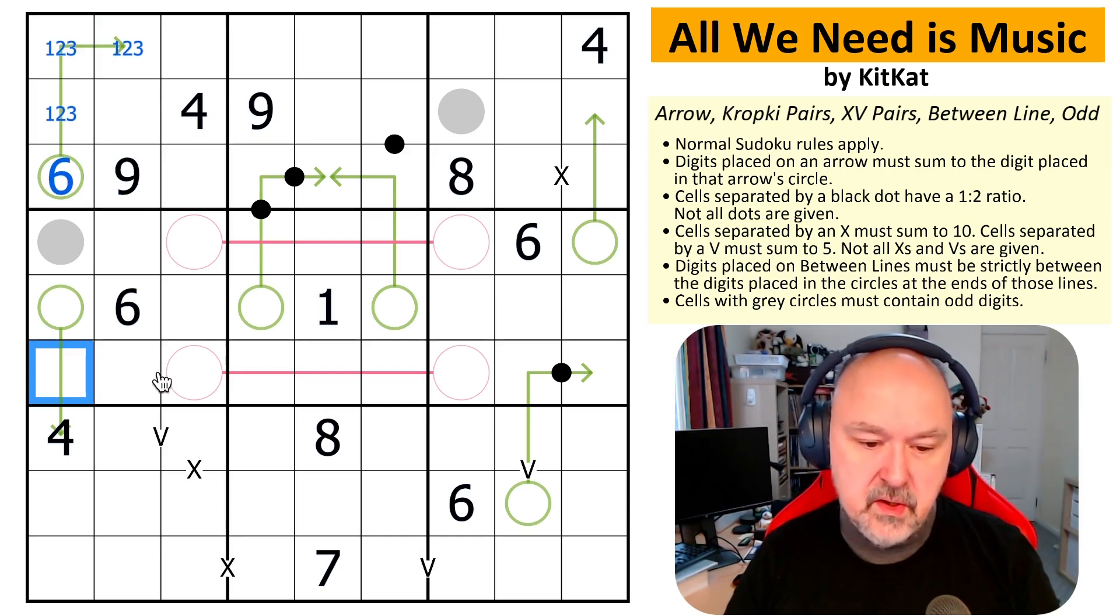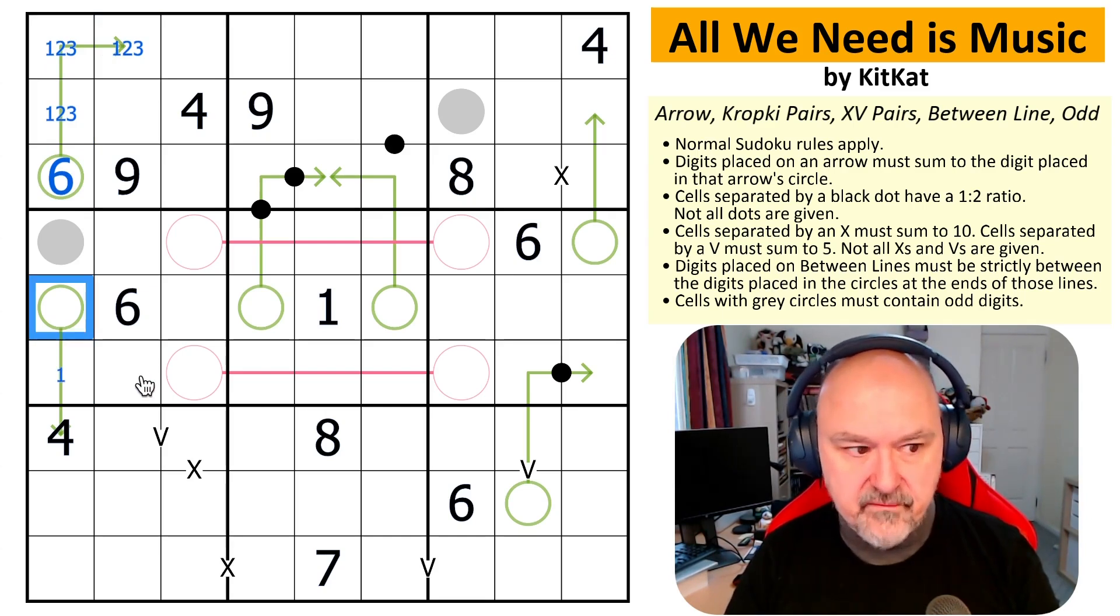Now, I could go 4, 1, 5. I can't go 4, 2, 6. I could go 4, 3, 7. I can't go 4, 4, 8 and I could go 4, 5, 9. So they seem possible.